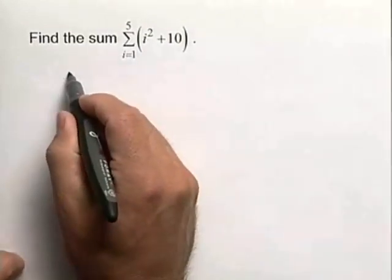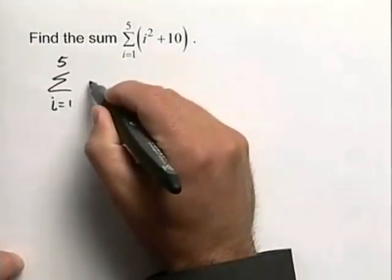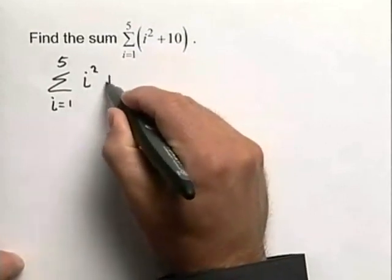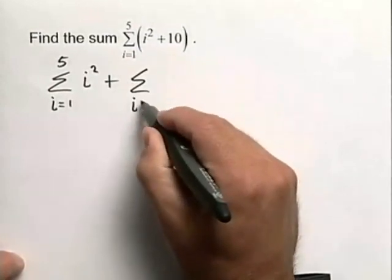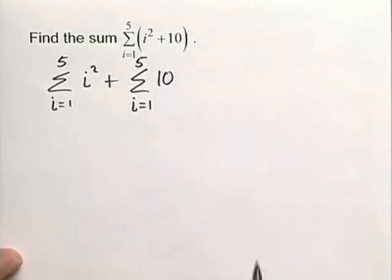Now we can use our summation properties to write this as a summation of i equals 1 up to 5 of i squared plus the summation of i equals 1 up to 5 of the constant 10.